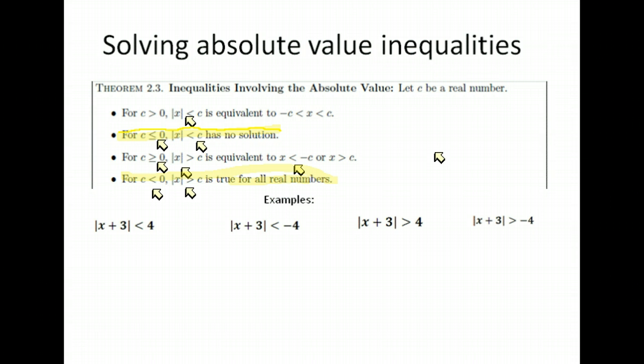Now it said that if we had a less than, we would set it up like this. So let's do that. x plus 3 is greater than negative 4, and it's less than 4. Now you can solve these simultaneously. You can set up a separate inequality. That is fine. But if you do it this way, it's a little faster because you solve 2 at once. So my goal was to isolate the x. I would do that by subtracting 3. I did it to each part.